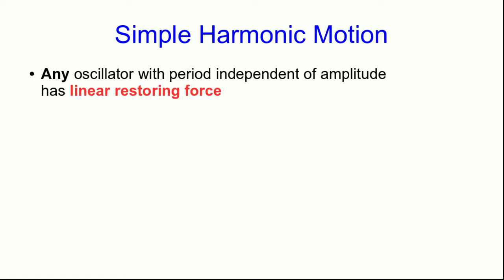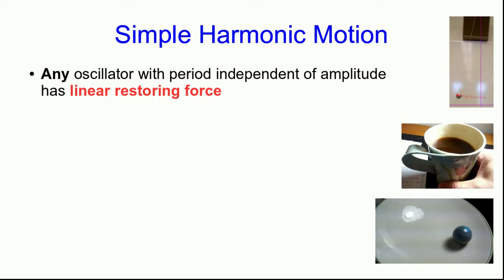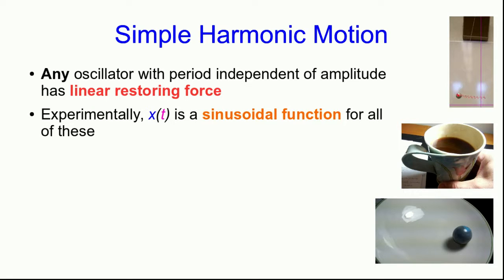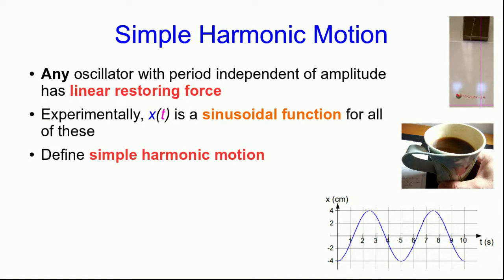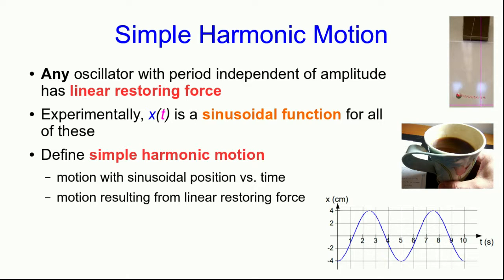This tells us that any oscillator with a period independent of amplitude has a linear restoring force. We already knew a mass on a spring had a linear restoring force, but it's not so obvious that a pendulum, or the surface of coffee in a mug, or a ball in a bowl would have one. But since they have periods independent of amplitude — at least for small amplitudes — the restoring force for each of them must be linear. All of these have something else in common: experimentally, we find that their position versus time is a sinusoidal function. So we define simple harmonic motion in two equivalent ways: motion with a sinusoidal position versus time, or equivalently, motion resulting from a linear restoring force.